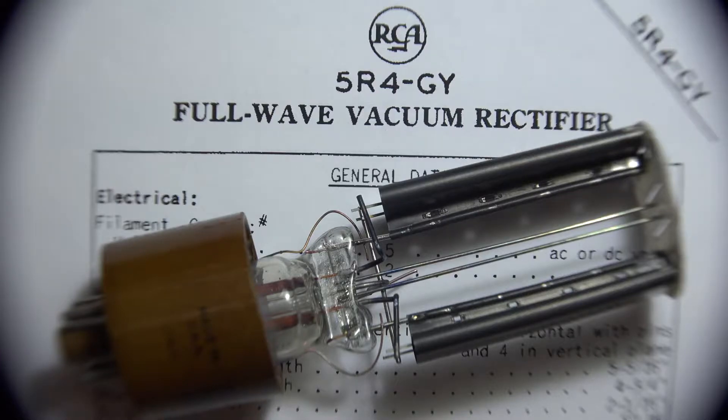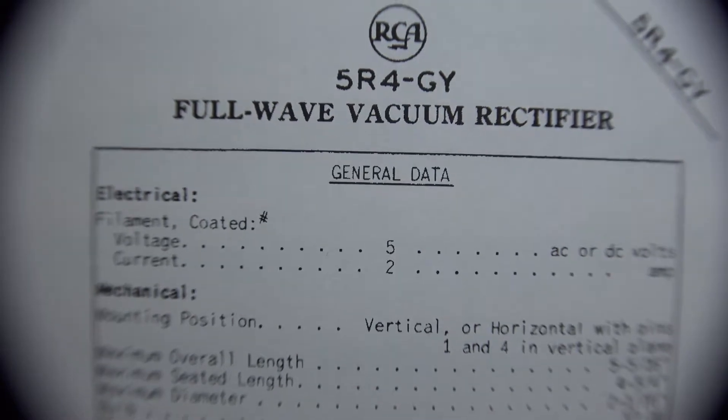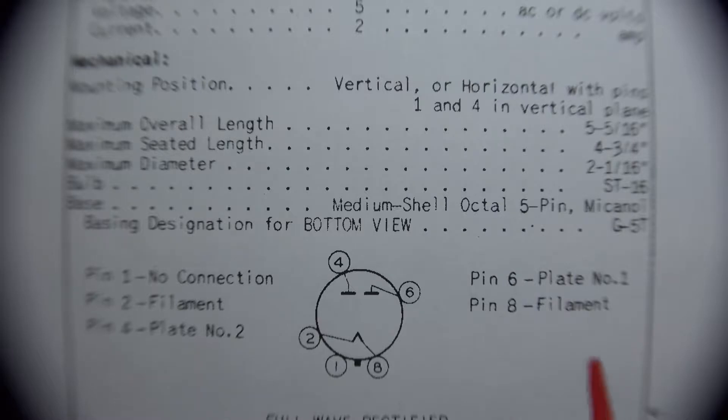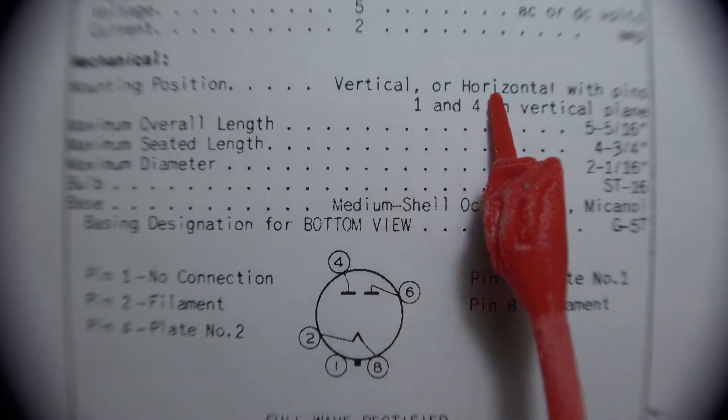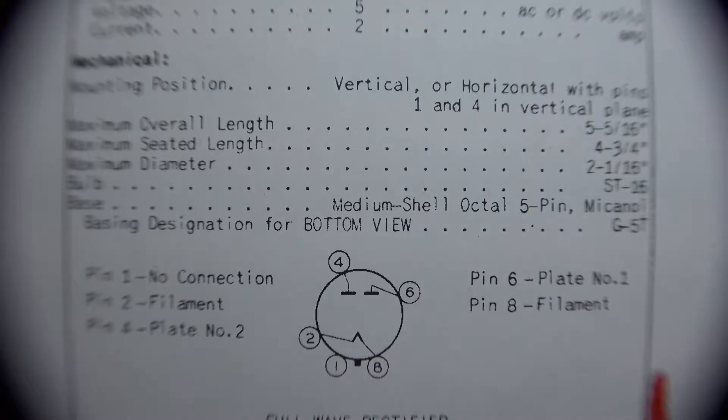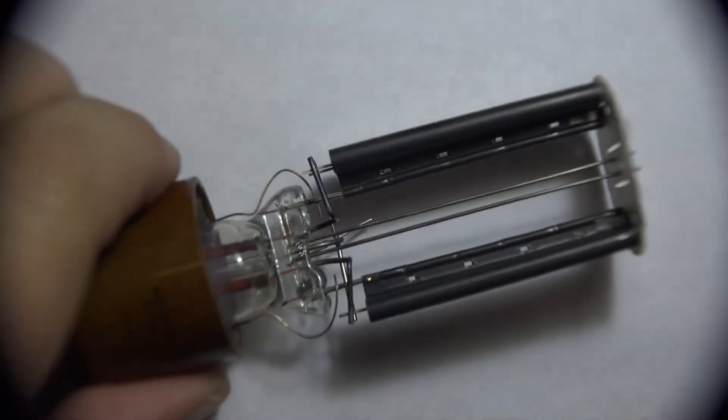All right, we're looking at a 5R4 from RCA. It's a full-wave rectifier. Some interesting things here: the mounting position - you can mount this vertically or horizontal as long as you have the pins 1 and 4 in the vertical plane. We'll go ahead and talk about why that is in a minute. It's a four pin device, so you got two pins on the bottom that are for the heater/cathode and then two anode pins at the top.